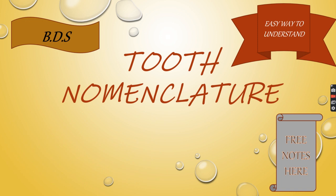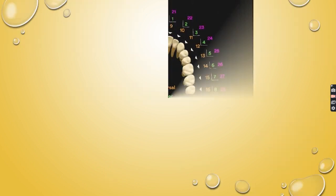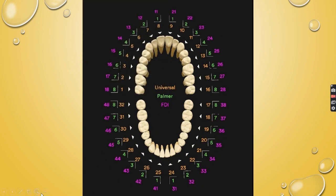First of all, see this image. Teeth are arranged in the jaw forming two dental arches: the maxillary arch, also known as the upper arch, and the mandibular arch, also known as the lower arch. Two arches together constitute the dentition. Each arch is divided by an imaginary line into quadrants: maxillary right, maxillary left, mandibular left, and mandibular right.